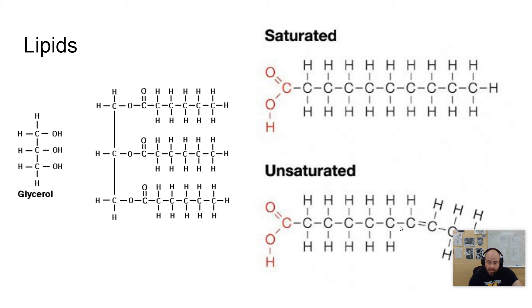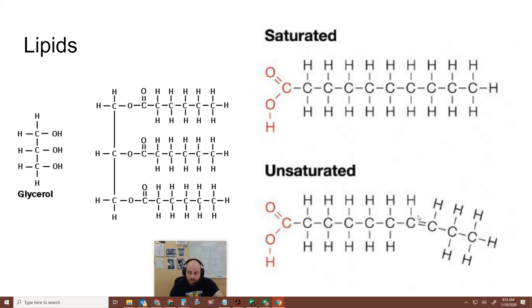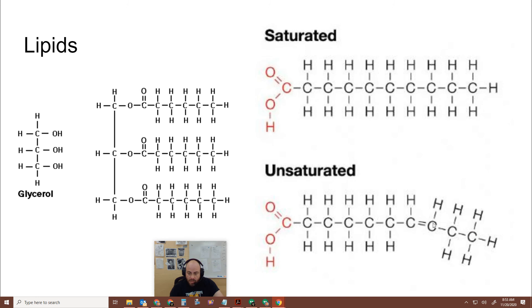Whereas unsaturated fats, notice you have this double bonded carbon right here. And you could put some more hydrogens in here. And so what causes this, this double bond causes this molecule to bend. Well, you can't put as many bent things in a box as you can non-bent things. And so unsaturated fats tend to be liquids at room temperature. There are some exceptions to these rules. But in general, those rules pretty much stand. And so again, it completely changes the way that these molecules react in a system.